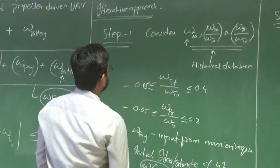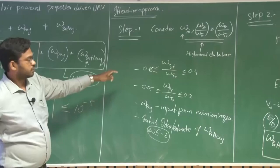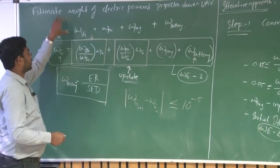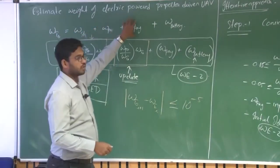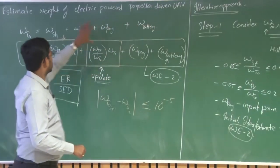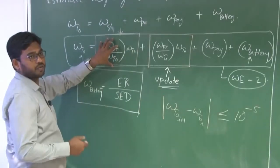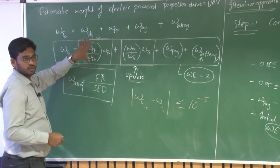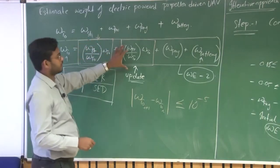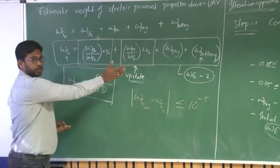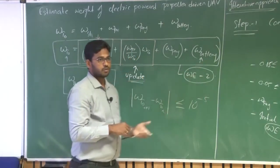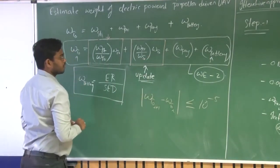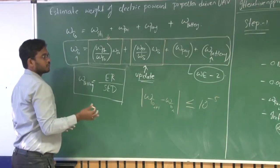Let us write the steps. The total takeoff weight is a summation of structural weight, propulsion weight, payload, and battery. This equation can be expressed in the form of weight fractions. The takeoff weight is a function of structural weight ratio and propulsion weight ratio. For an electric powered propeller driven aircraft, we are not considering the battery weight ratio here. This equation will give an estimate of the overall takeoff weight.